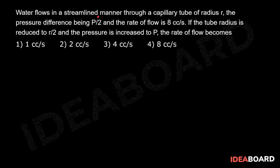Water flows in a streamlined manner through a capillary tube of radius r, the pressure difference being p by 2 and the rate of flow is 8 cc per second. If the tube radius is reduced to r by 2 and pressure is increased to p, the rate of flow becomes.